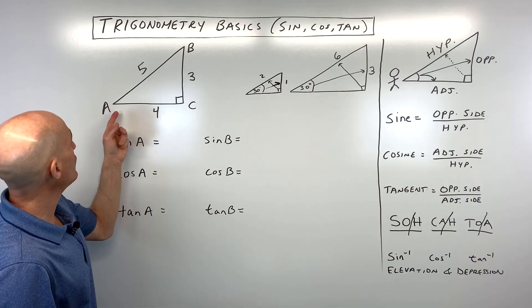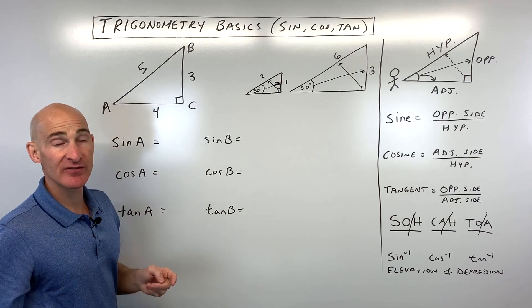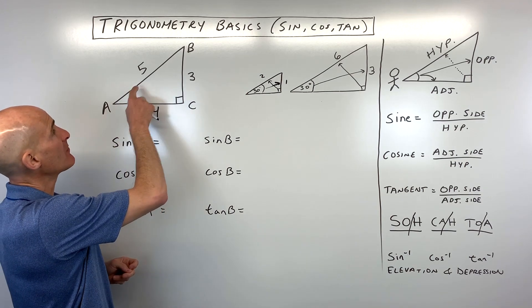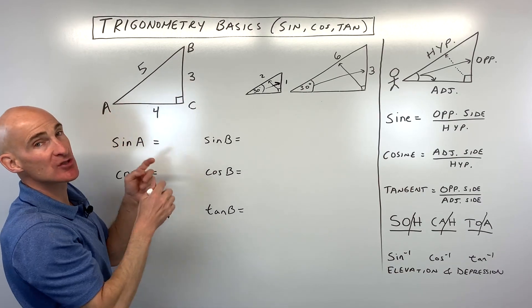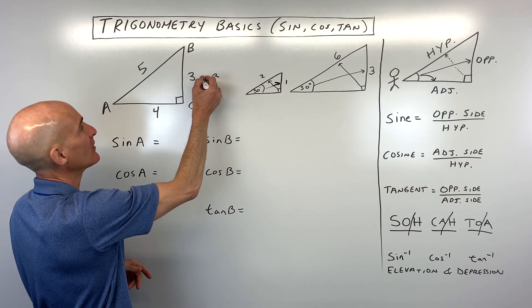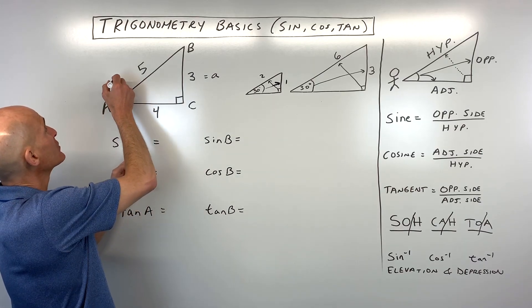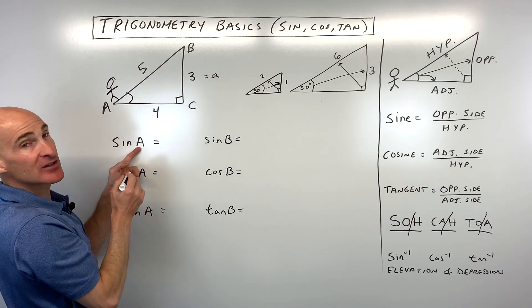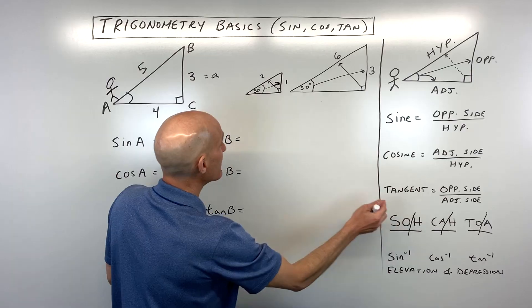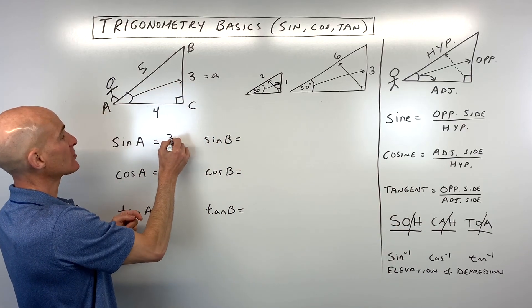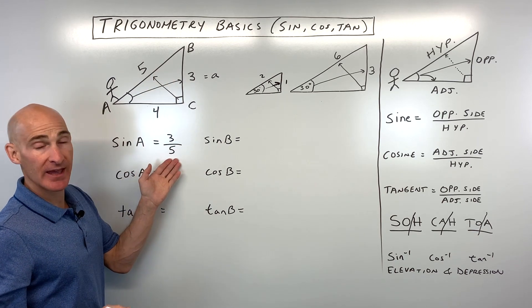Let's get into this first introductory example. We want to find the sine of angle A, the cosine of angle A, and the tangent of angle A. When we talk about angles, we use capital letters, whereas the sides across from the angles use lowercase letters. To find the sine of angle A, pretend you're standing at that angle — that's your perspective. Sine is opposite divided by hypotenuse, so opposite is three, divided by the hypotenuse, which is five. So the sine of angle A is three-fifths.